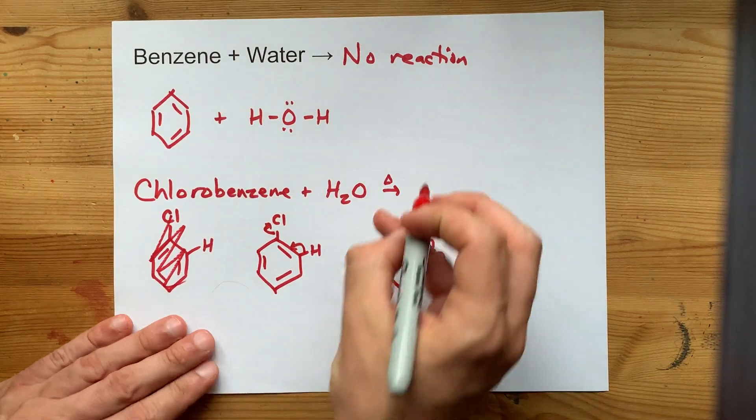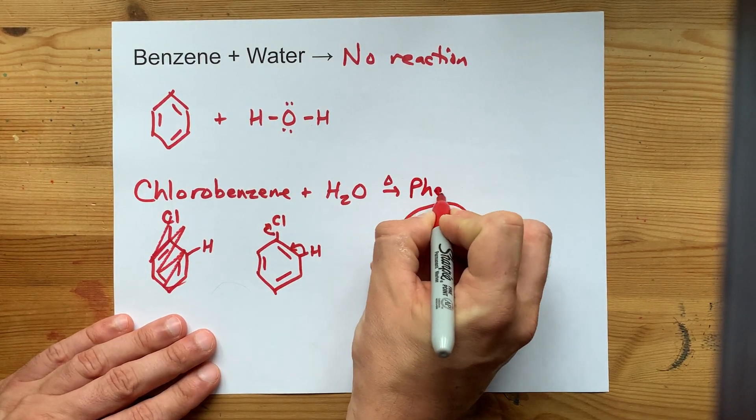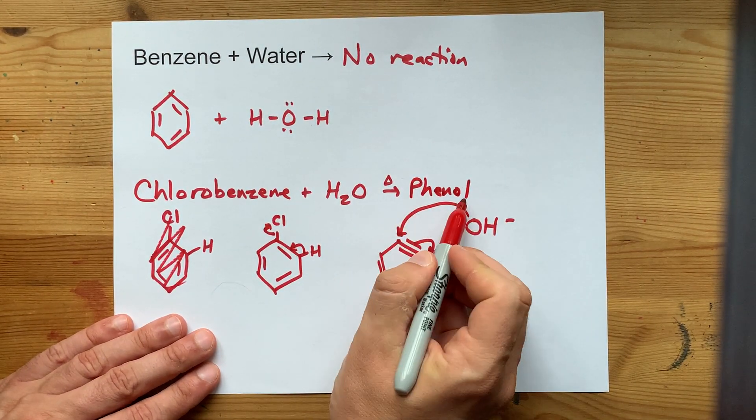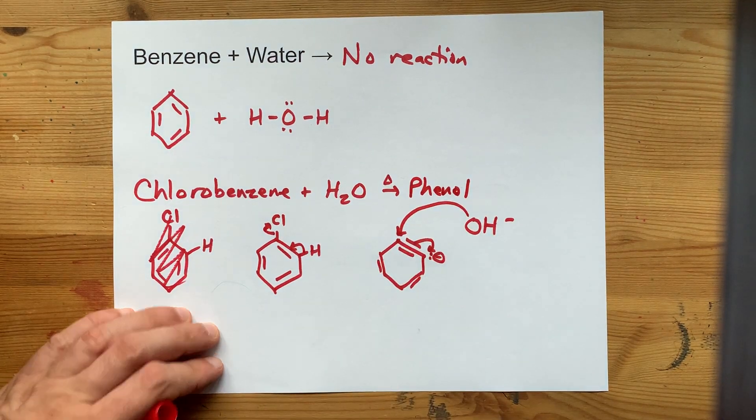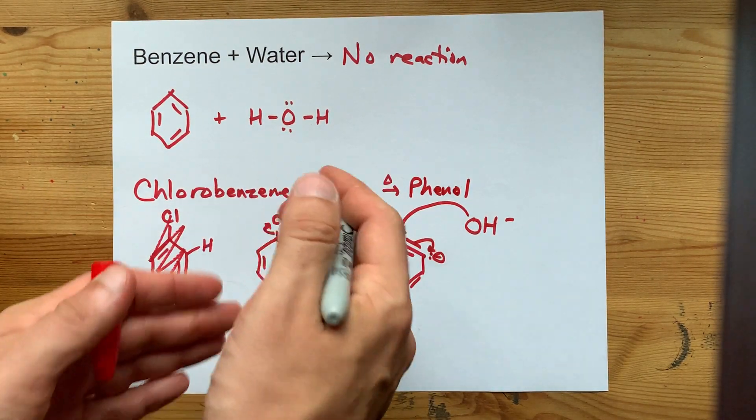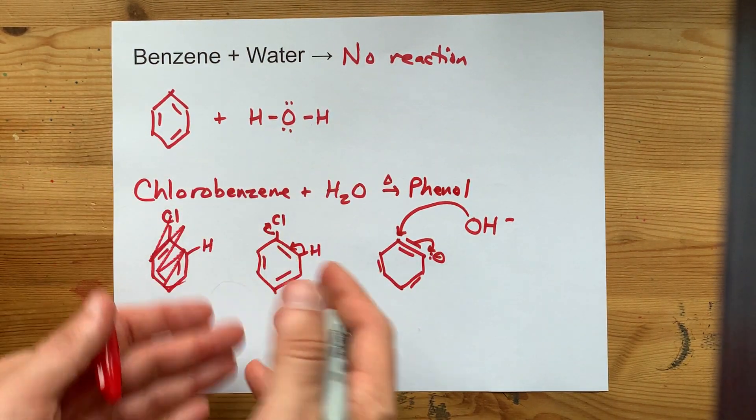So you'd end up with what we call phenol, or a benzene ring with an OH on it. The OH has displaced the chlorine on the ring.